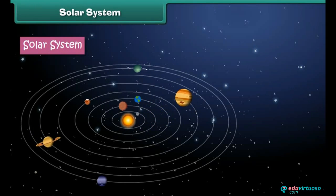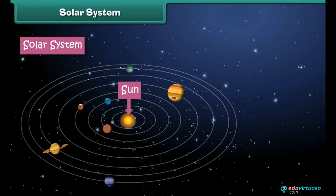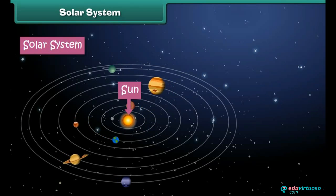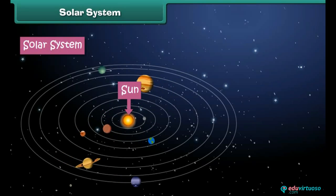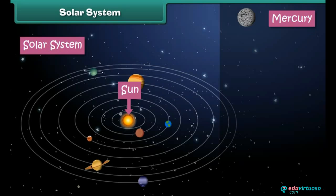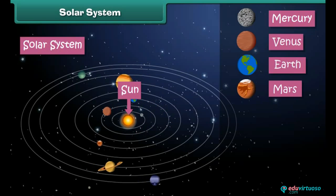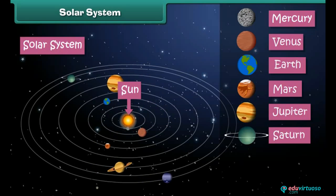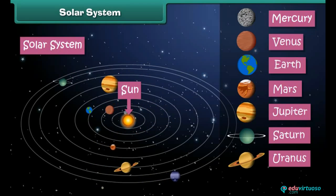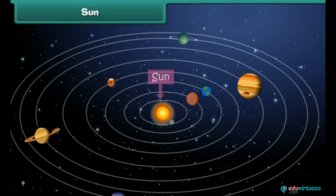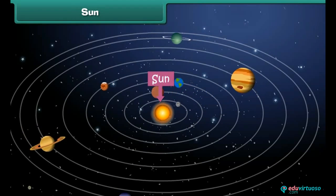Solar system: we live in the solar system. The solar system is the family of the Sun and its eight planets. The Sun is placed at the center and the eight planets revolve around it. The eight planets are Mercury, Venus, Earth, Mars, Jupiter, Saturn, Uranus, and Neptune.